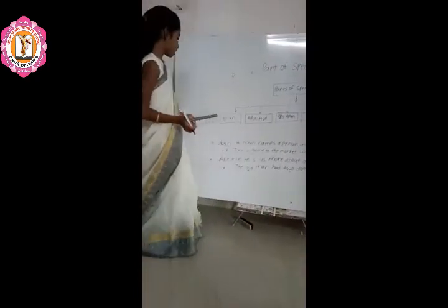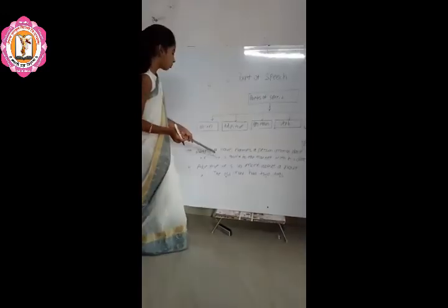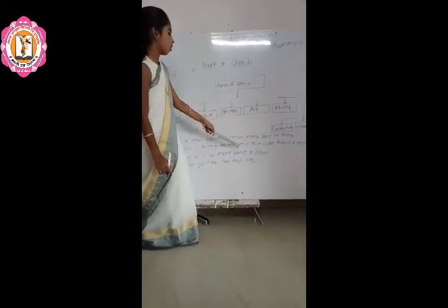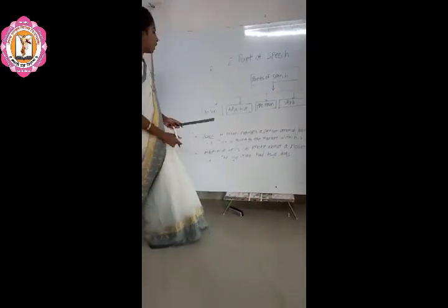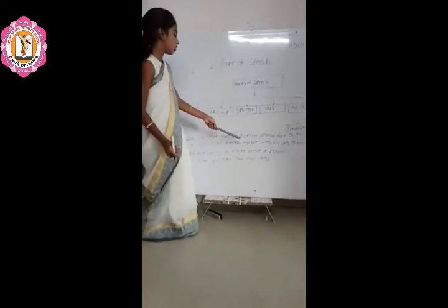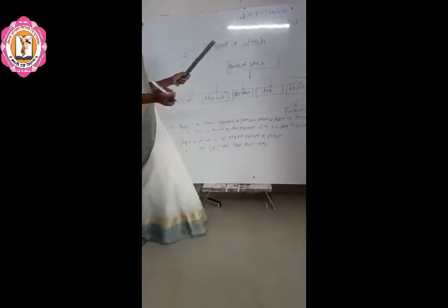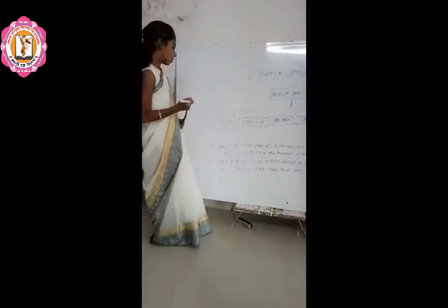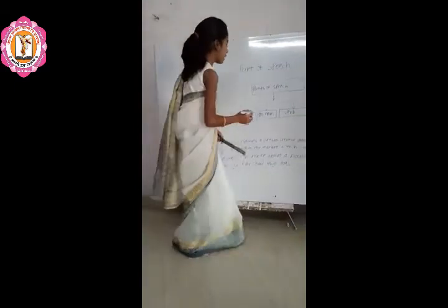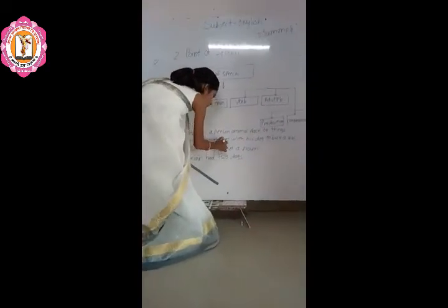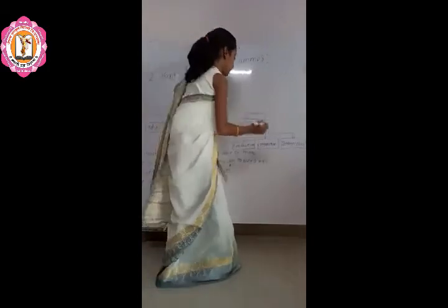Noun is the first part of speech. A noun names a person, animal, place, or thing. For example: Joy is going to the market with his dog to buy a ball. So students, which are the nouns? Joy is a person, market is a place, dog is an animal, and ball is a thing.